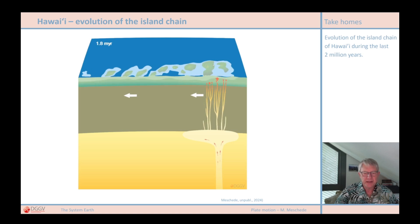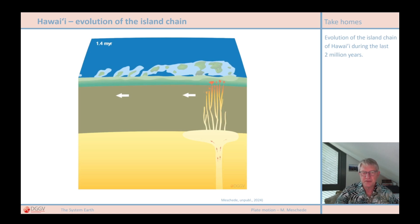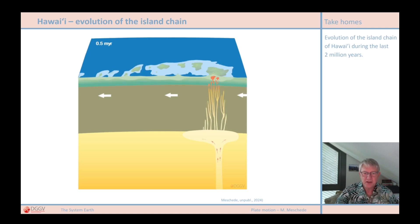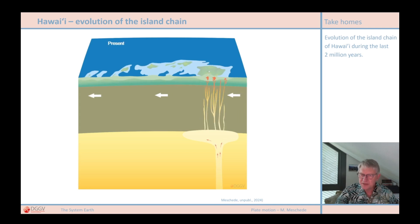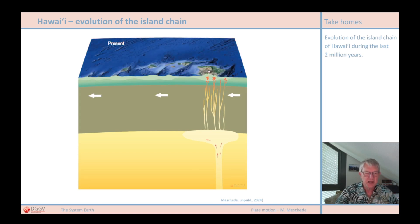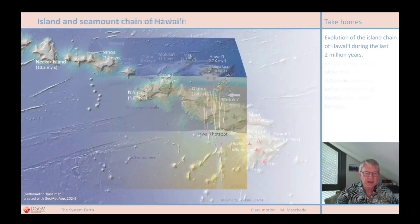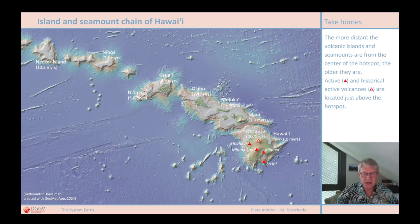The classic example of a volcanic chain formed over a hot spot is, of course, the Hawaiian island chain. In this animation, you can see how the island chain has developed over the last two million years. The volcanoes always form above the hot spot, and as the plates move, the volcanic islands are gradually transported out of the hot spot zone so that the volcanoes become inactive. Today, Hawaii's active volcanoes are on Big Island — Kilauea, currently one of the most active volcanoes on Earth; Mauna Loa, which last erupted in 1984; and Hualalai, which erupted several times in the 18th century. Off the southern coast, in less than 1,000 meters of water depth, there is an active submarine volcano, Loihi, which may rise to the sea surface in a few thousand years.